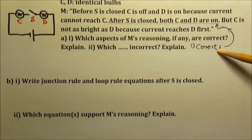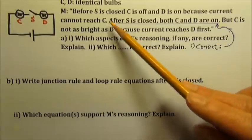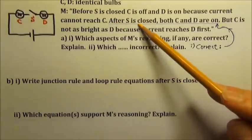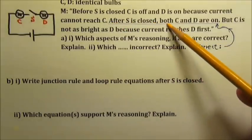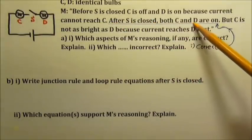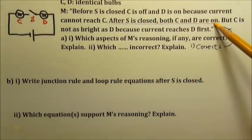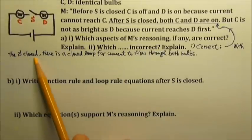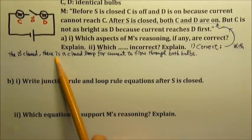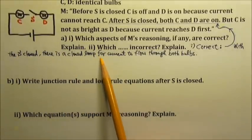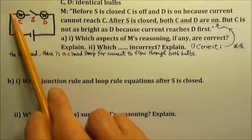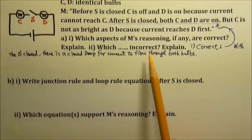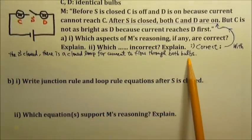The correct reasoning is: after the switch is closed, both bulbs C and D are on. With the switch closed, there is a closed loop for current to flow through both bulbs.